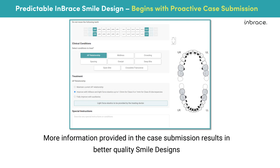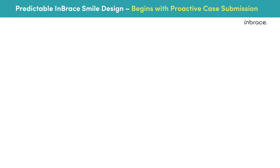Similar to the three stages for the smile design process, we've simplified our treatment prescription form to three buckets. The first part of the form is where we can input the teeth we want to treat and have brackets placed on — for example, upper 6-6 or lower 4-4.